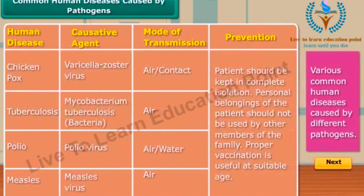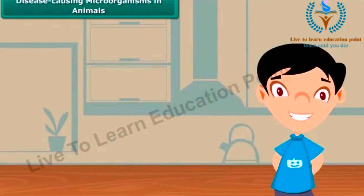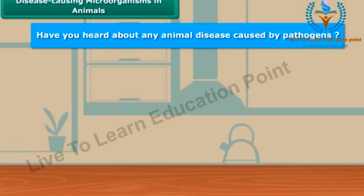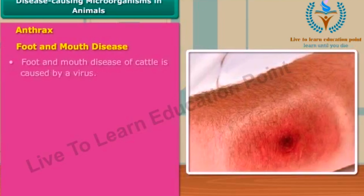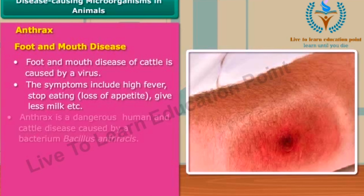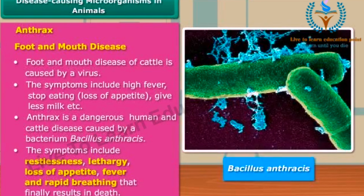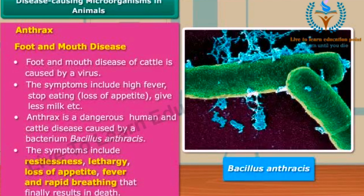Here is a list describing various common diseases caused by different pathogens. Now let's move on to diseases in animals. Anthrax and foot-and-mouth disease are common examples of animal diseases. Anthrax is a bacterial disease caused by Bacillus anthracis, while foot-and-mouth disease in cattle is caused by a virus.